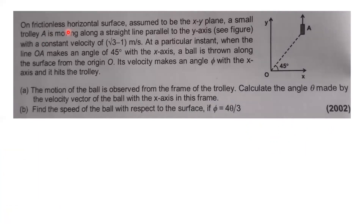On a frictionless horizontal surface, assumed to be the XY plane, a small trolley A is moving along a straight line parallel to the Y-axis with a constant velocity of root 3 minus 1 meter per second. At a particular instant, when line O makes an angle of 45 degrees with the X-axis, a ball is thrown along the surface from the origin O. Its velocity makes an angle pi with the X-axis and it hits the trolley.